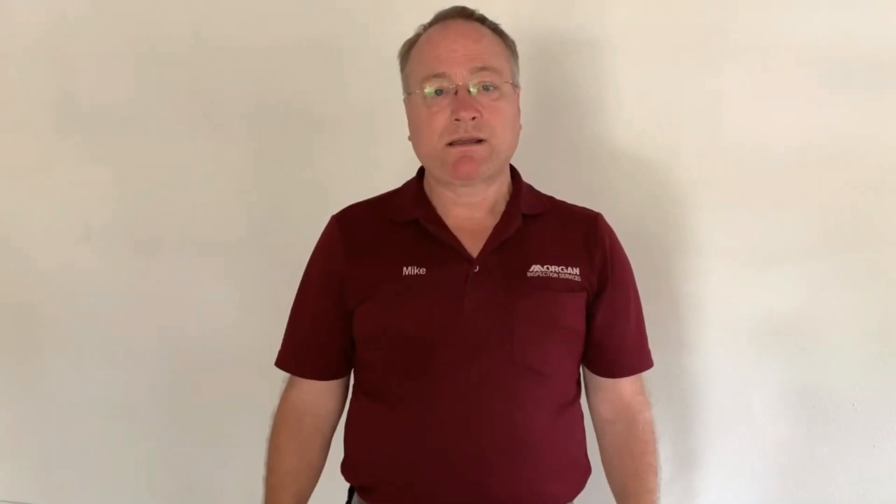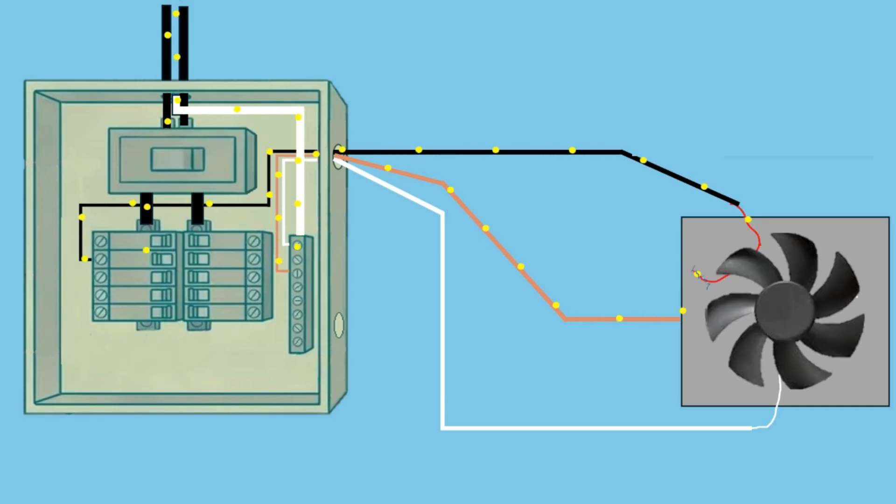So the very second that that wire comes loose and touches the frame a high current is sent back to the panel through that ground wire or the equipment grounding conductor and that causes the breaker to trip power to the washing machine and thus it's no longer a danger to electrocute people. So that's what grounding does for you.